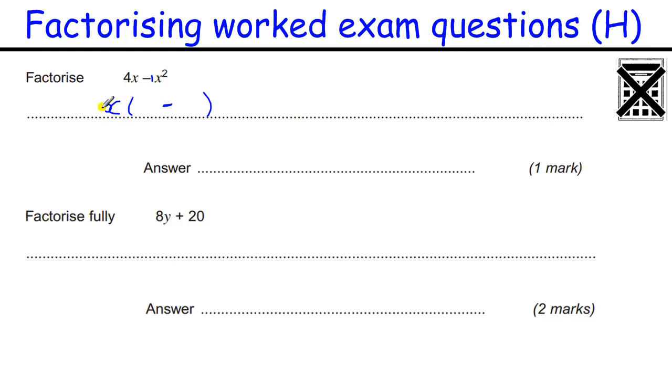Now when I'm trying to figure out what goes into the bracket, I'm thinking about what do I times this part by to get this when I multiply it out. So I'm doing the reverse. So what do I times by x to get 4x? I times by 4. And what do I times by x to get x squared? I times by x. And there we go. One mark.